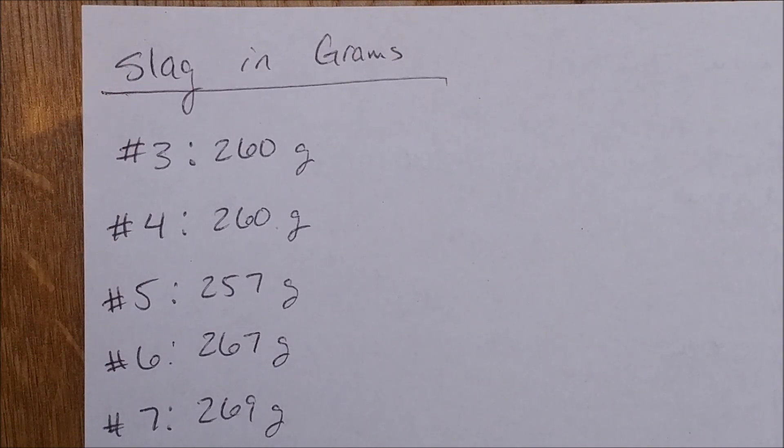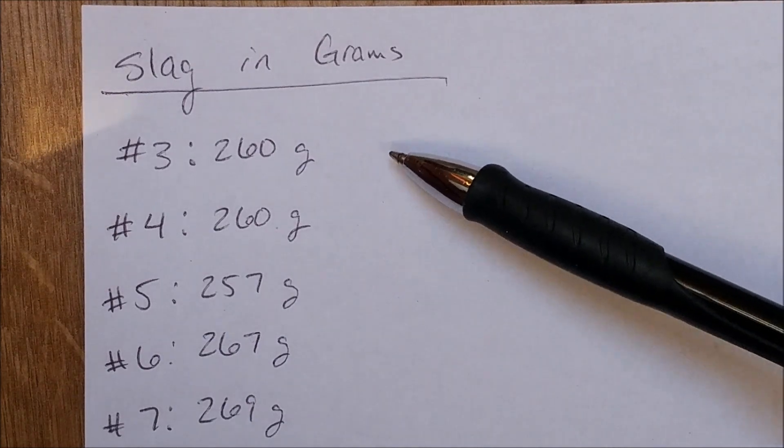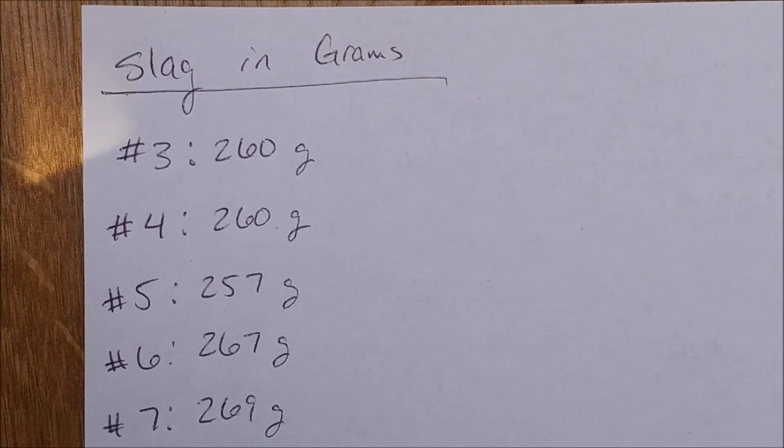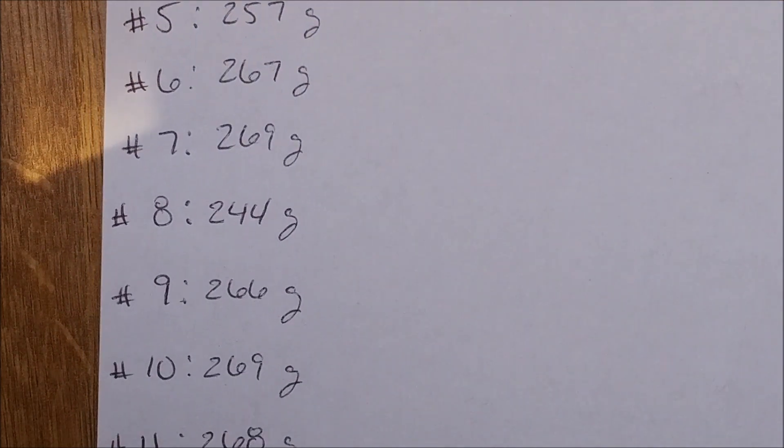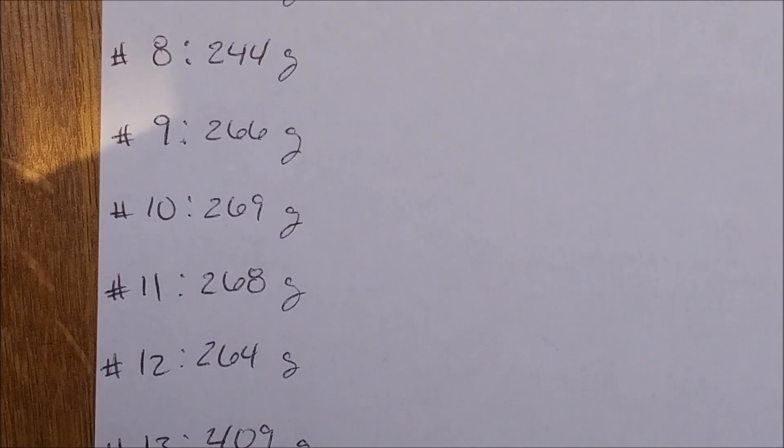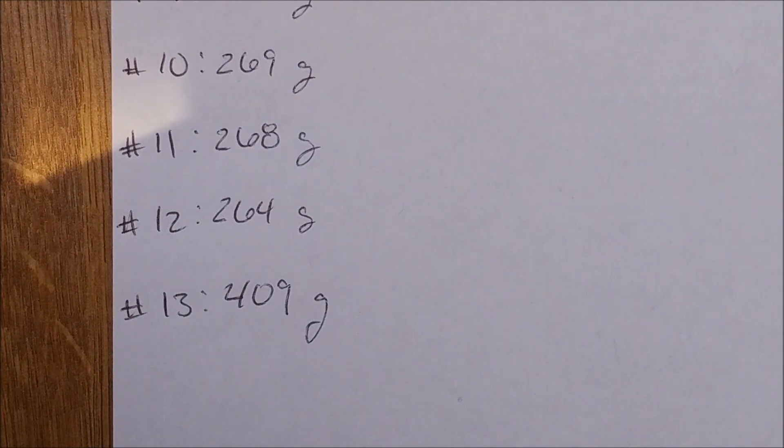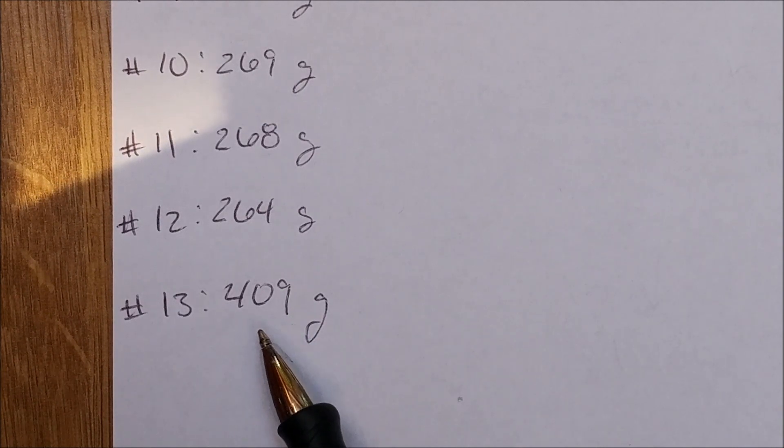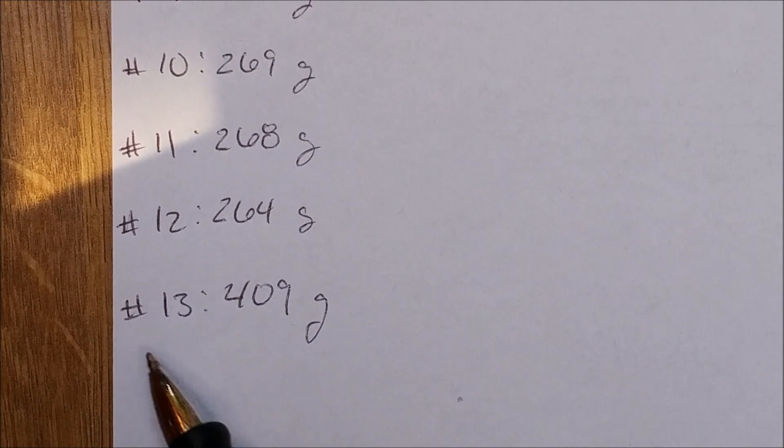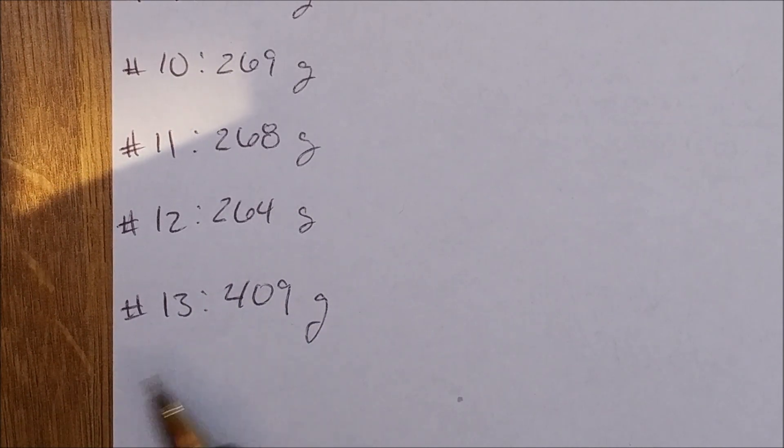One more number you guys are going to need if you're going to check all my math is the weight of the slag. And so I just wrote them out here. This is the sample number and this is the weight of the slag. So I'm not going to talk, I'll just go through this real quick and you guys can pause and then get all the grams of the slag if you want to check my math. And the only one that's different here is the one on the bottom. This is the Chapman flux one. I added a lot more flux to that one and I only used 50 grams of shaker table cons. So be careful if you're going to do the math on this one, this is half the amount of shaker table cons and quite a bit more flux.